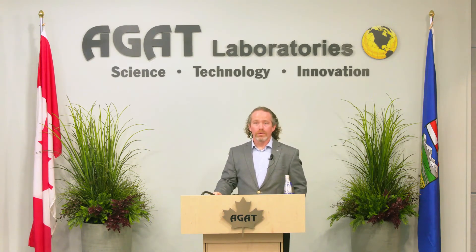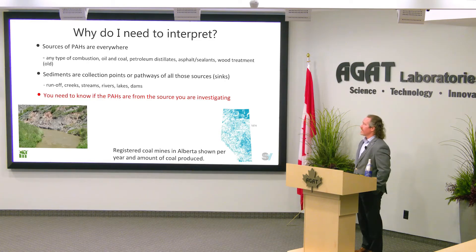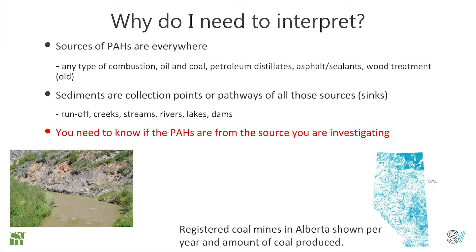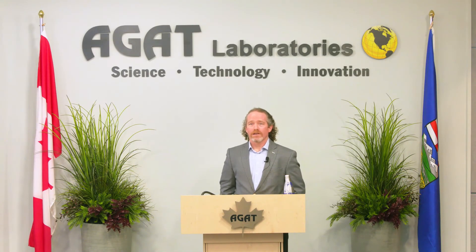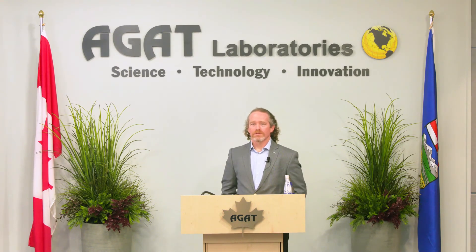In the rainfall, PAHs gather in rivers and streams and accumulate at low points. PAHs are essentially everywhere in the environment — any type of combustion, oil and coal, petroleum distillates, asphalt and sealants, and wood treated with creosote all have large amounts of PAHs. Even cooking on the barbecue or smoking fish and meat in your home smoker will produce PAHs, though that's not such an important source for the broader environment.